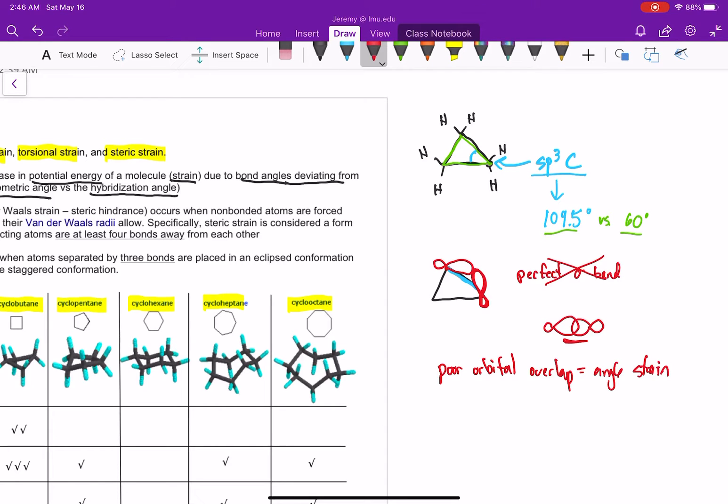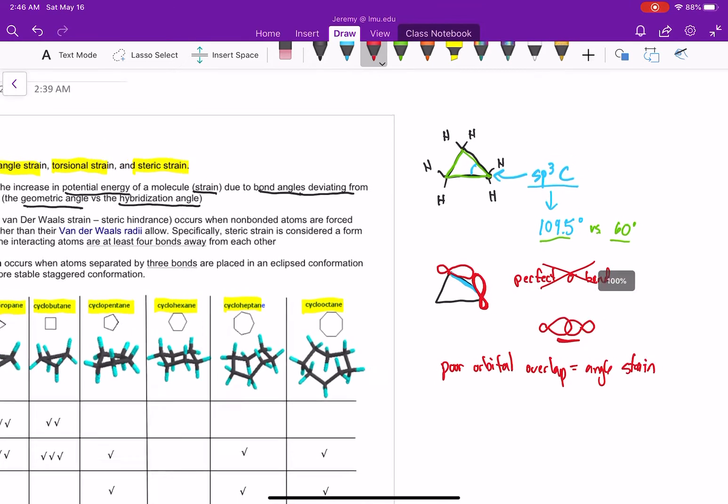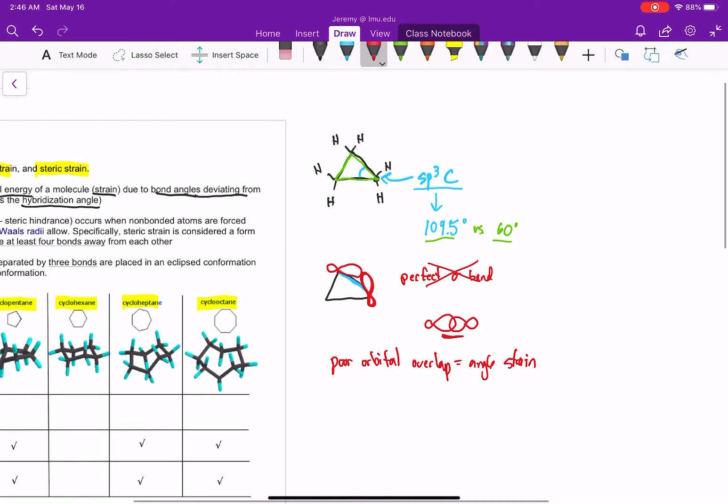And it turns out we only really see substantial angle strain in two molecules. Cyclopropane and cyclobutane.